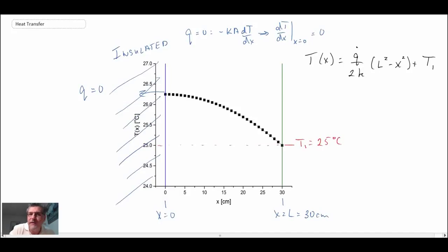Well, that means the temperature does not change with spatial location, and consequently you would then expect this to be a flat line or zero slope at this location. So dT by dx at x equals 0 is equal to 0, and that's what we're seeing in the plot. So that's good.